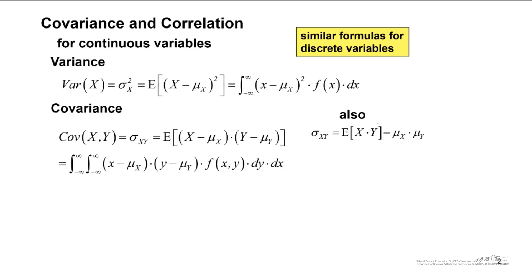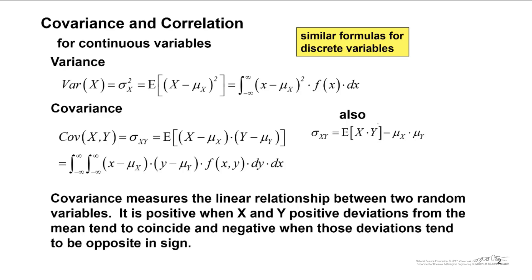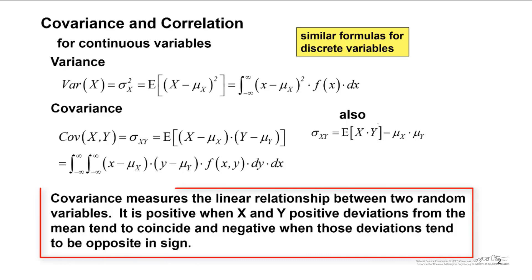I don't want you to get too hung up on these formulas. It's actually rare that we're going to be using these exact formulas — they apply when you know the exact probability density function f(x) for variance, or the joint probability density function f for covariance. A lot of times you don't know this, and so you estimate these things from data. In contrast to variance, which measures the spread of a univariate measurement, covariance measures the linear relationship between two random variables.